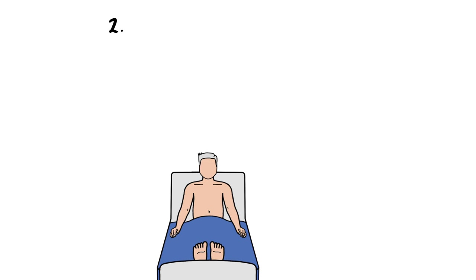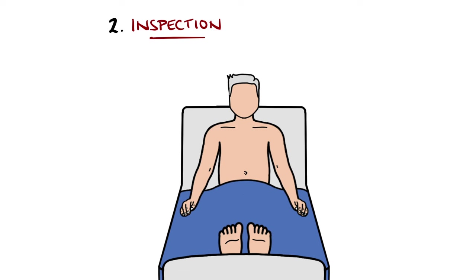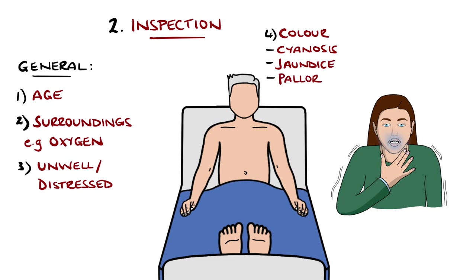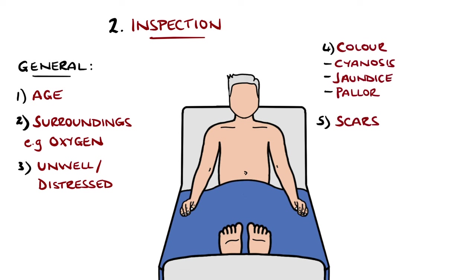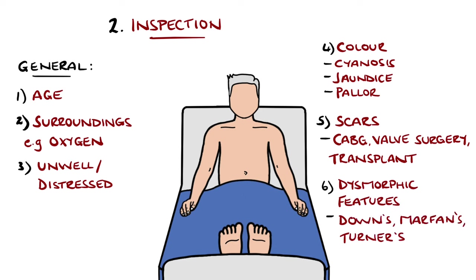Inspection initially involves observing the patient generally and noting features such as age, objects such as oxygen, and do they appear unwell or to be in any distress such as being short of breath. Other features to note include color changes like cyanosis, jaundice or extreme pallor. Also to be included are the presence of any scars that may indicate previous surgeries like coronary artery bypass grafts, valve replacement or even transplant. Dysmorphic features suggestive of Down's, Marfan's or Turner's syndromes should also be noted, as these syndromes often have associated cardiac pathologies.